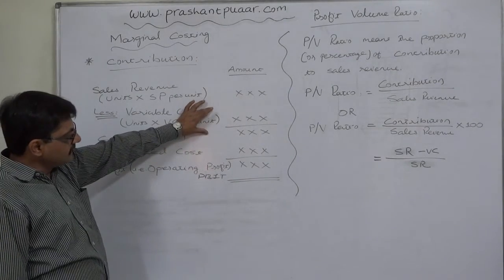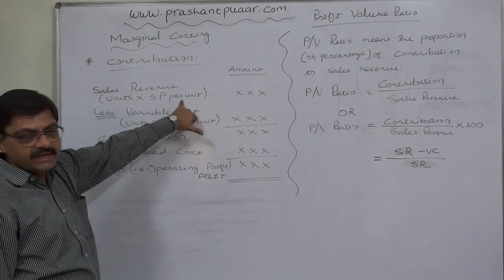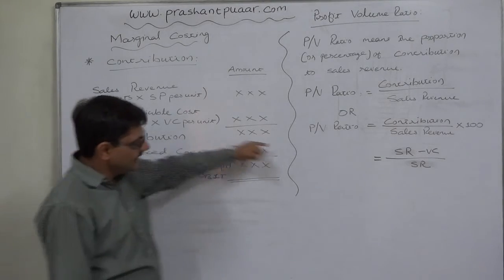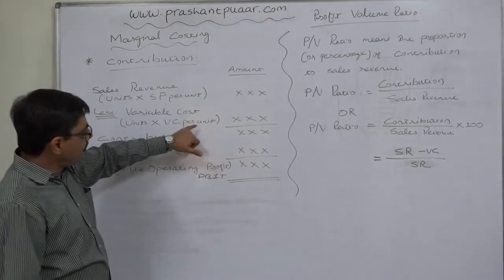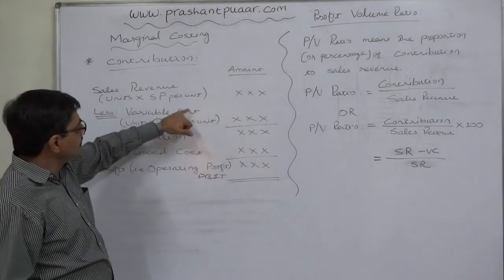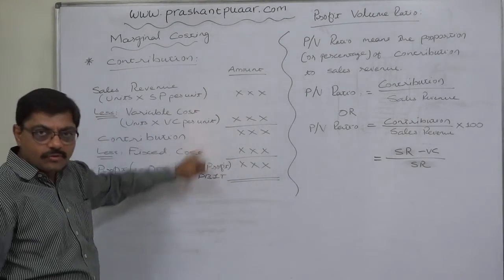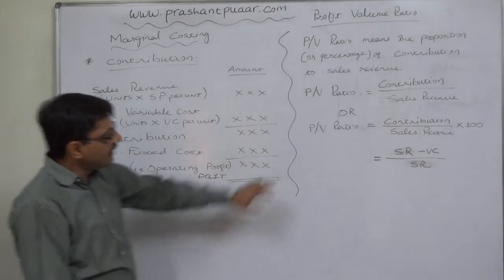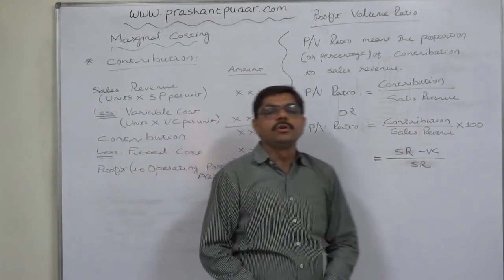If variable cost increases without change in selling price, our contribution decreases and PV ratio will decrease. If our variable cost decreases without change in selling price, then our contribution will increase and our PV ratio will also increase.